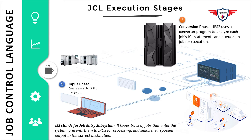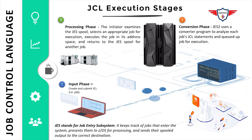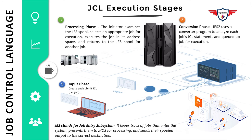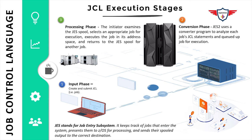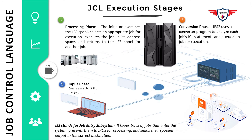The third stage is the processing phase. In this phase, the initiator examines the JES spool, selects an appropriate job for execution, executes the job in its address space, and returns to the JES spool for the next job. The operating system does not necessarily process jobs in the order they are submitted. Instead, JES examines the jobs in the job queue and prioritizes work by selecting the most important jobs first. There are two important parameters for this: job class and priority.